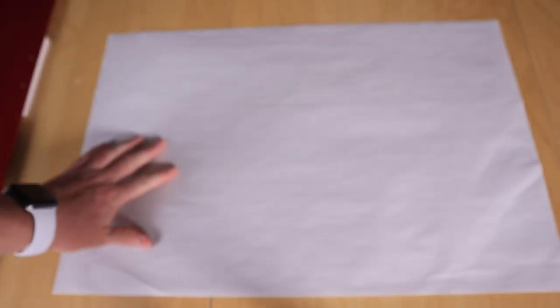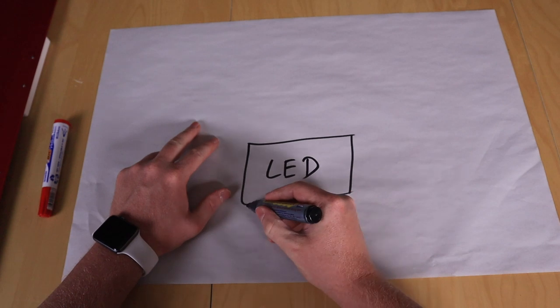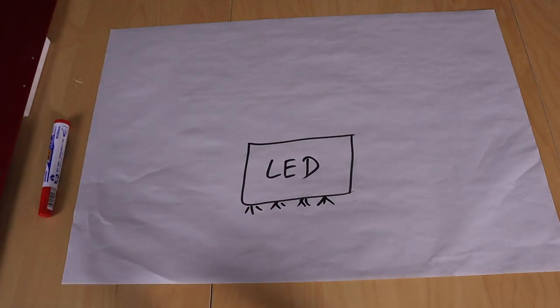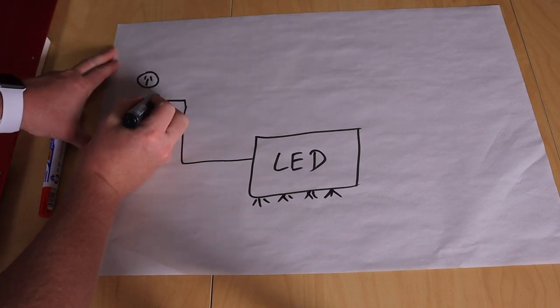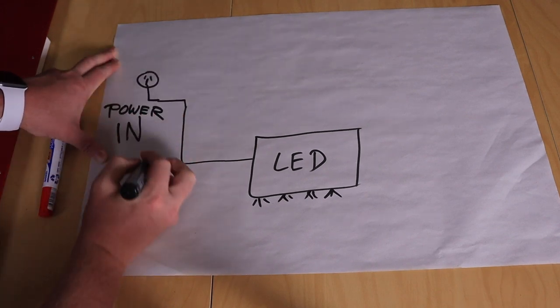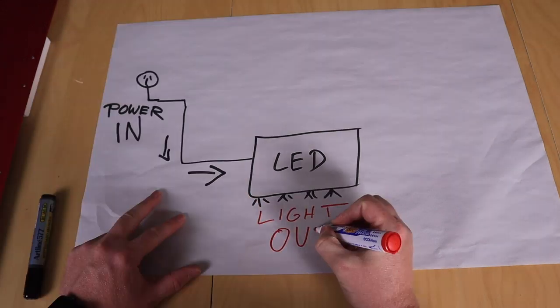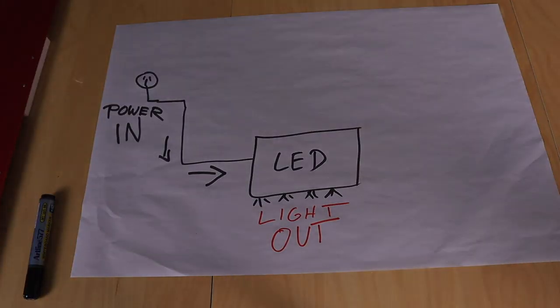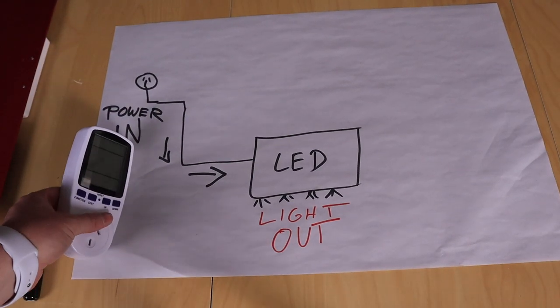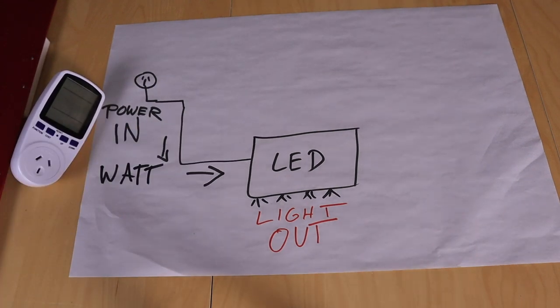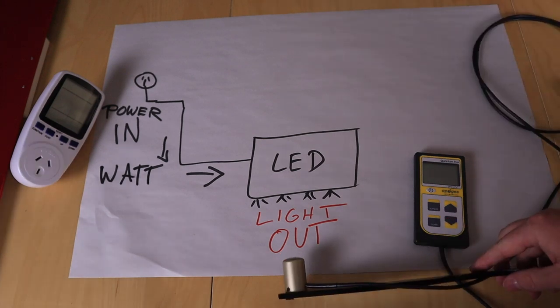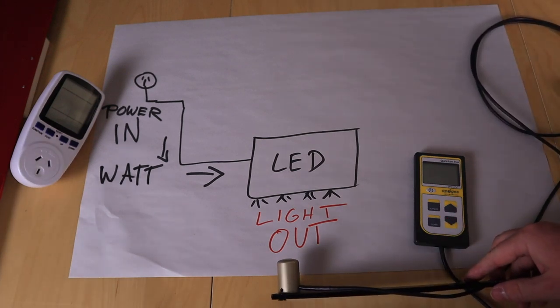Now we need to measure these things because we want to know what they can do. This is a grow light. This is the electricity. You plug that into the wall. This is the light that comes out. We are measuring how much electricity something uses. It tells us how many watts go in. And then we use this thing to measure how much light is coming out of it.